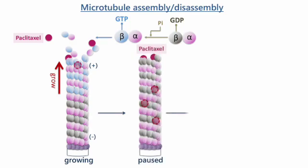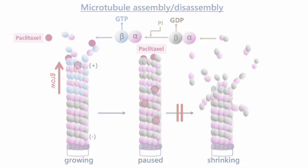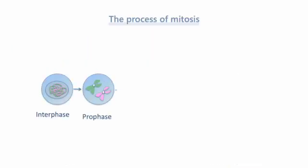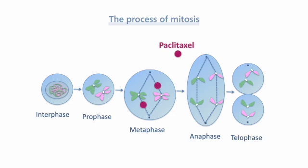During cell division, microtubules and spindles constantly grow and shorten by addition and loss of the enzyme tubulin GTPase from their tip. Paclitaxel binds to microtubules, promotes excessive stabilization of microtubules, and inhibits their shortening, thereby blocking cell division and leading to cell death.